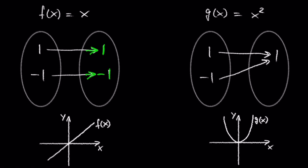In other words, a 1 to 1 function is a function in which each output value corresponds to exactly one input value.